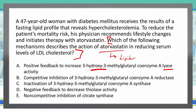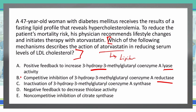Answer B is competitive inhibition of 3-hydroxy-3-methylglutaryl coenzyme A reductase. I just mentioned it's a reductase inhibitor, so B might be my answer, but I'll keep looking. Answer C is activation of 3-hydroxy-3-methylglutaryl coenzyme A synthase. Synthase is not what I'm looking for — I need the reductase inhibitor, not an activator. So I'm marking out C.